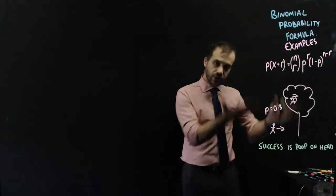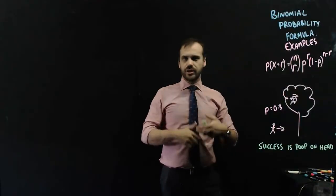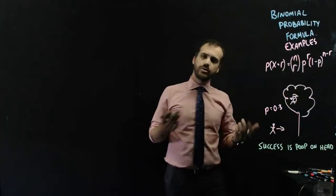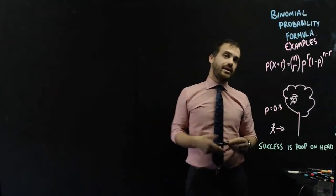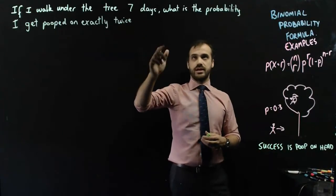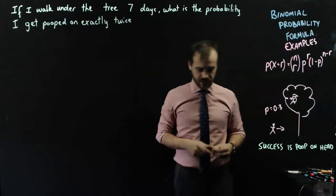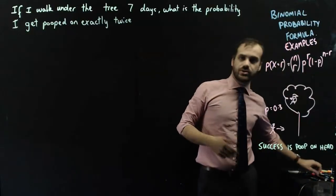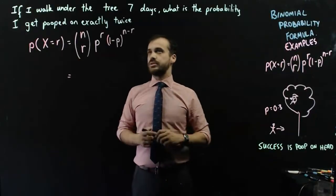So now that we've got this scenario in our heads, I'm going to walk under the tree for a week, seven days, and I wonder what the probability is that I get pooped on my head exactly two times. If I walk under the tree seven days, what is the probability I get pooped on exactly twice? Now we can just jump straight into working with our formula.